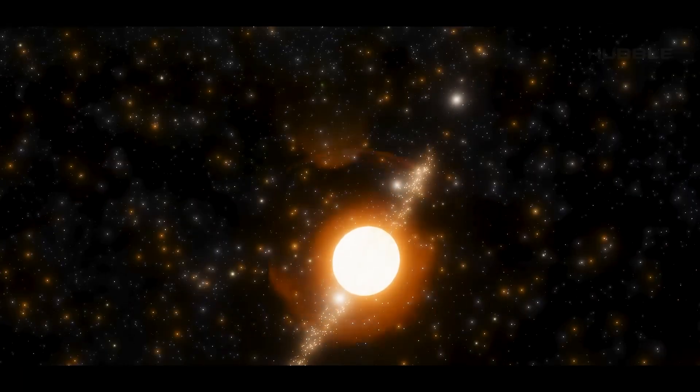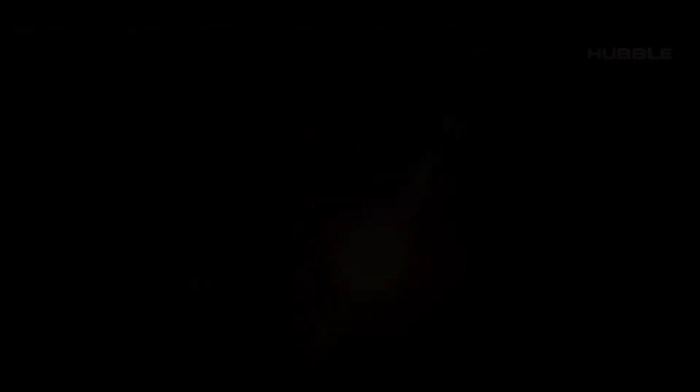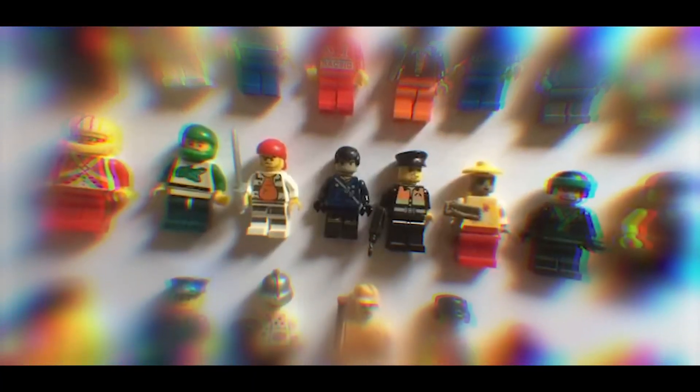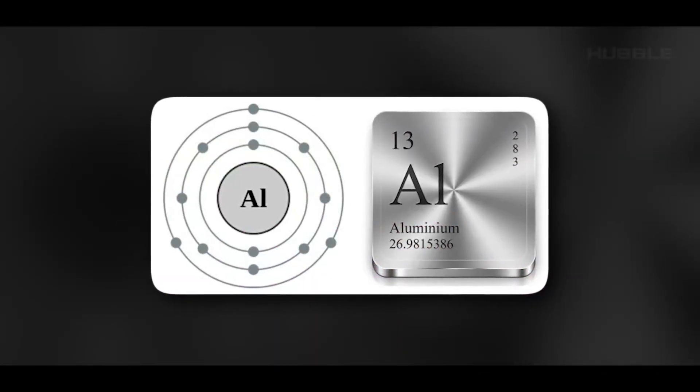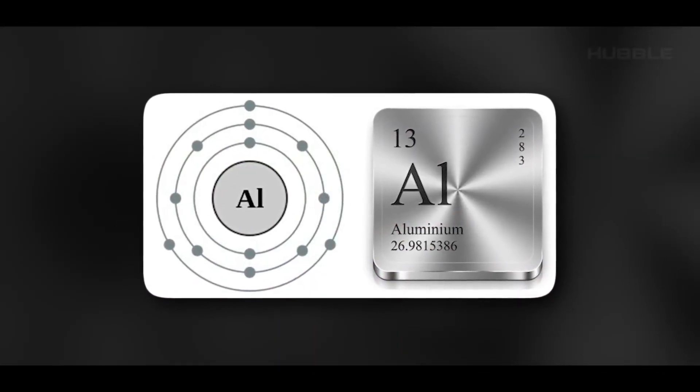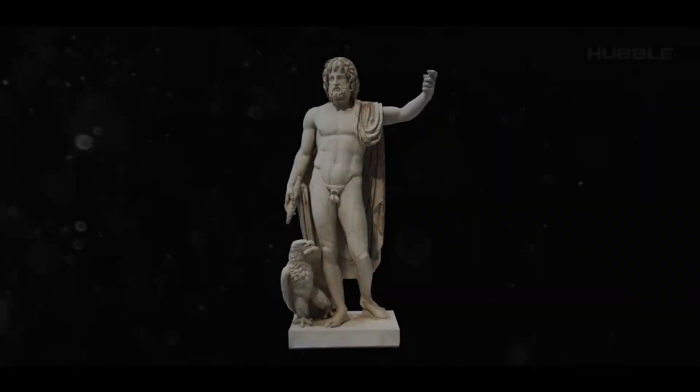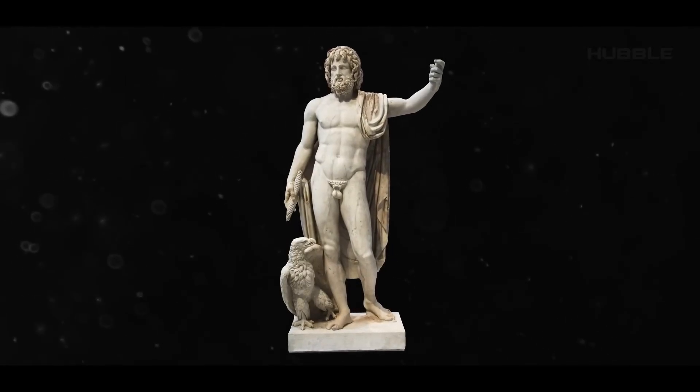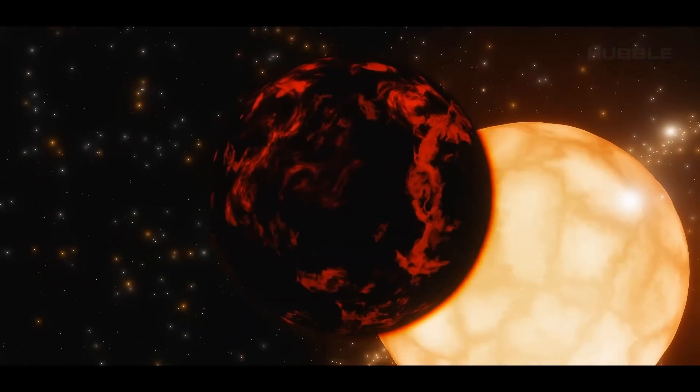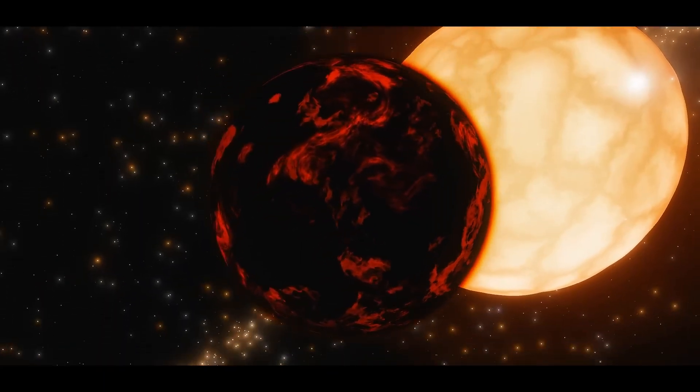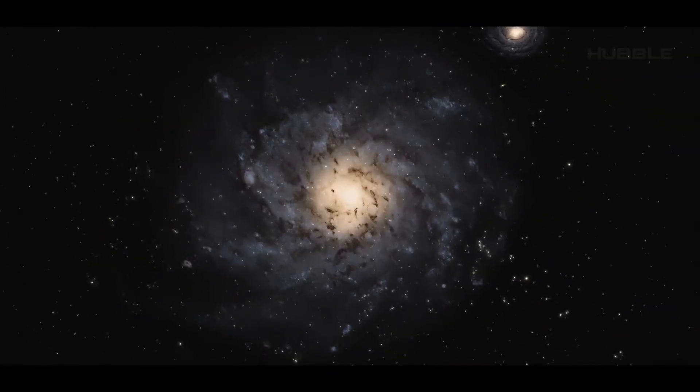Remarkably, the probe was equipped with solar panels and figurines for its flight. Lego, yes, you heard that right. Actually, they are made of aluminum to withstand the extremes of space, and they represent the silhouettes of the god Jupiter, his wife Juno, and Galileo Galilei himself, who once discovered the four largest moons of the giant planet.